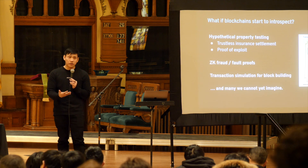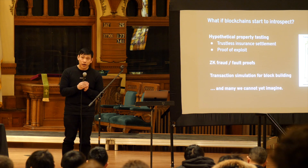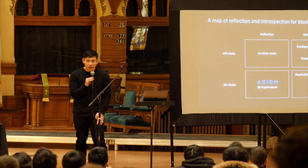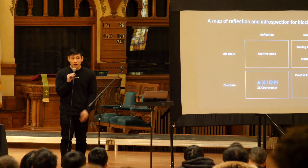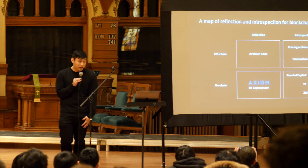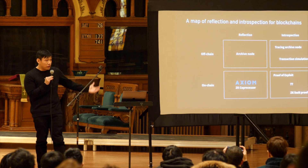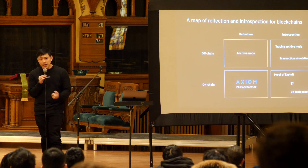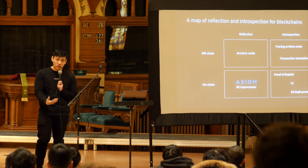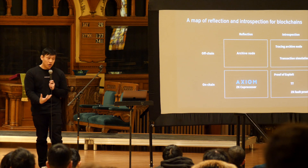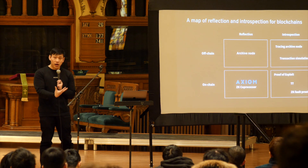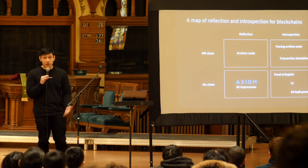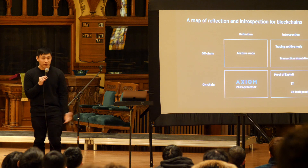We're very early in thinking about these possibilities, but I wanted to introduce this to the conversation. To summarize: we can map off-chain usage of archive nodes to reflection, and enhanced archive nodes with tracing or transaction simulation to introspection. We're building something to handle reflection on-chain at Axiom, and we're very early on understanding what's going to happen with introspection on-chain.